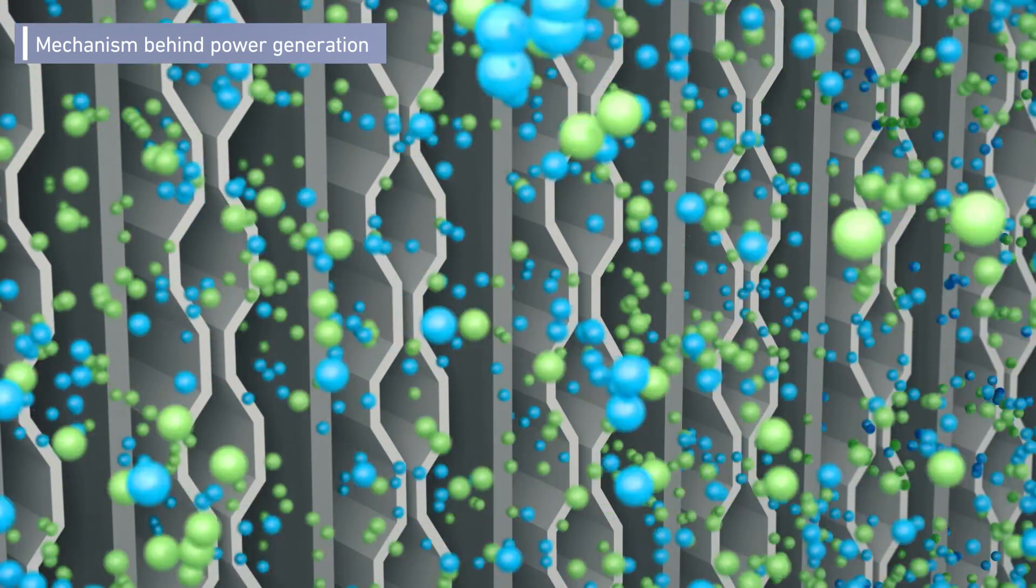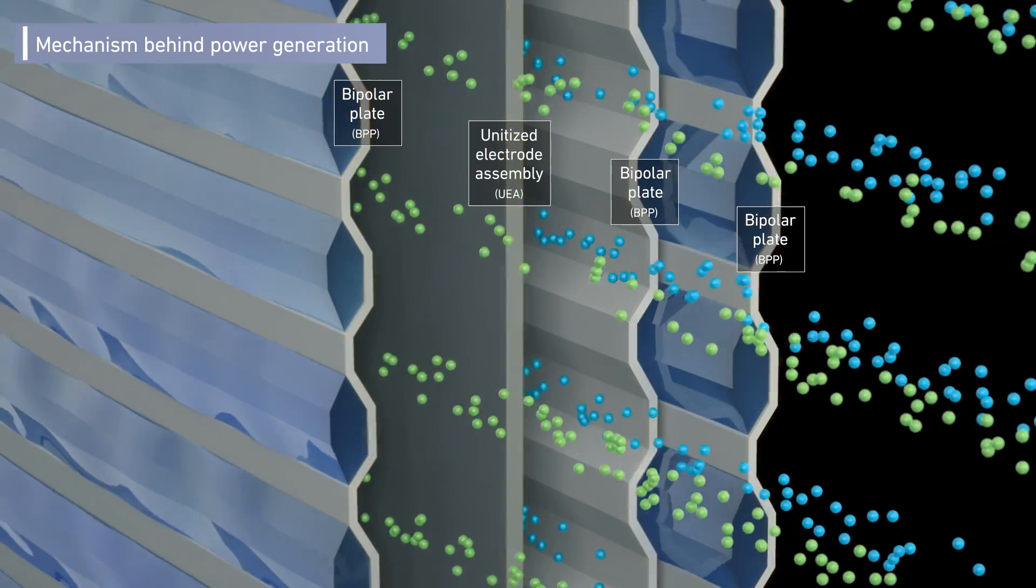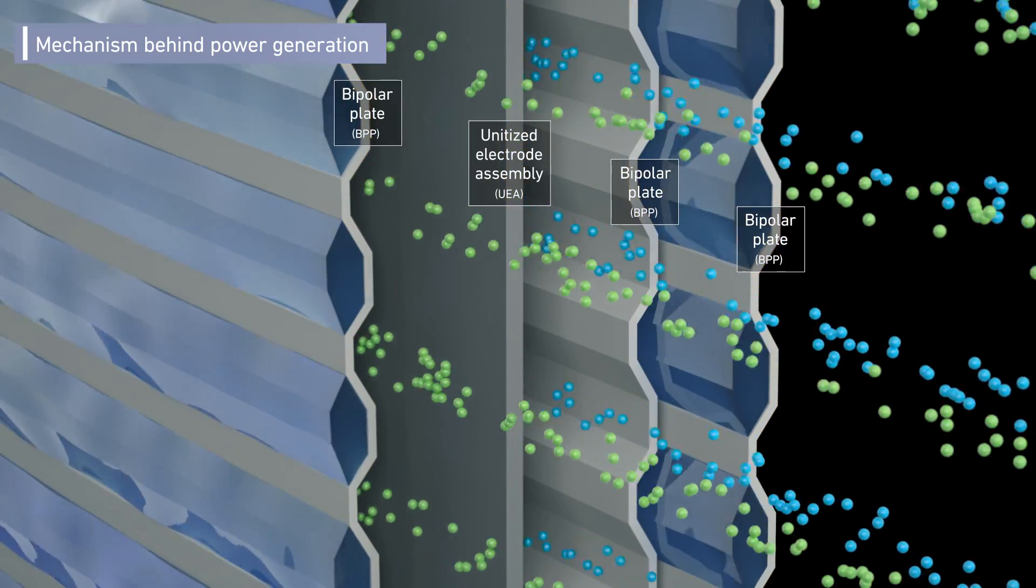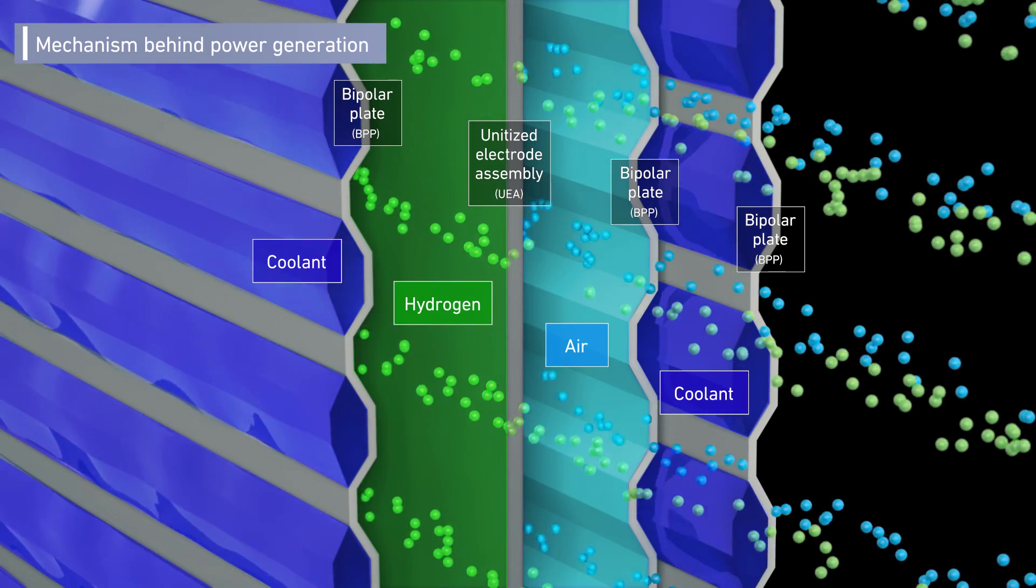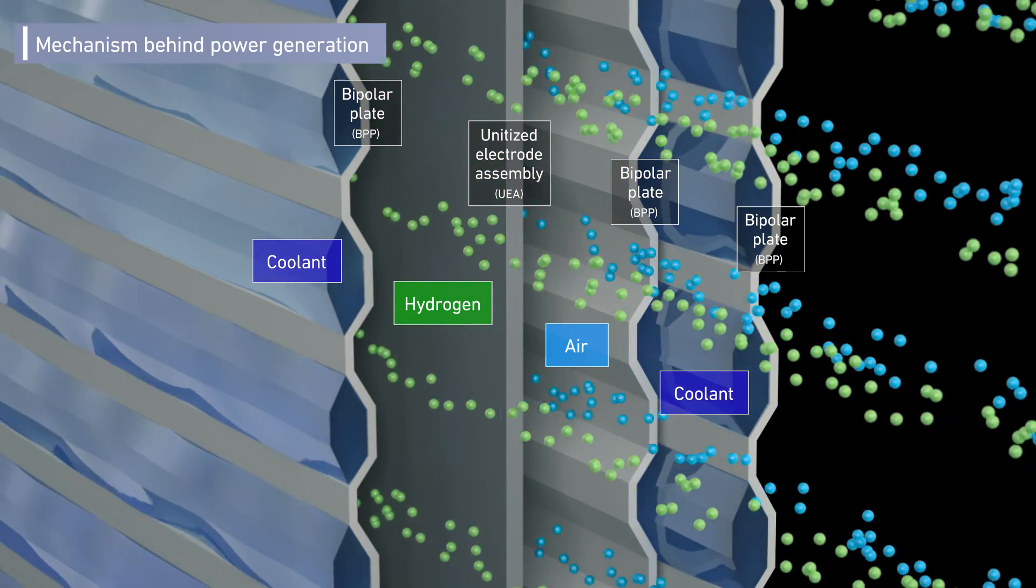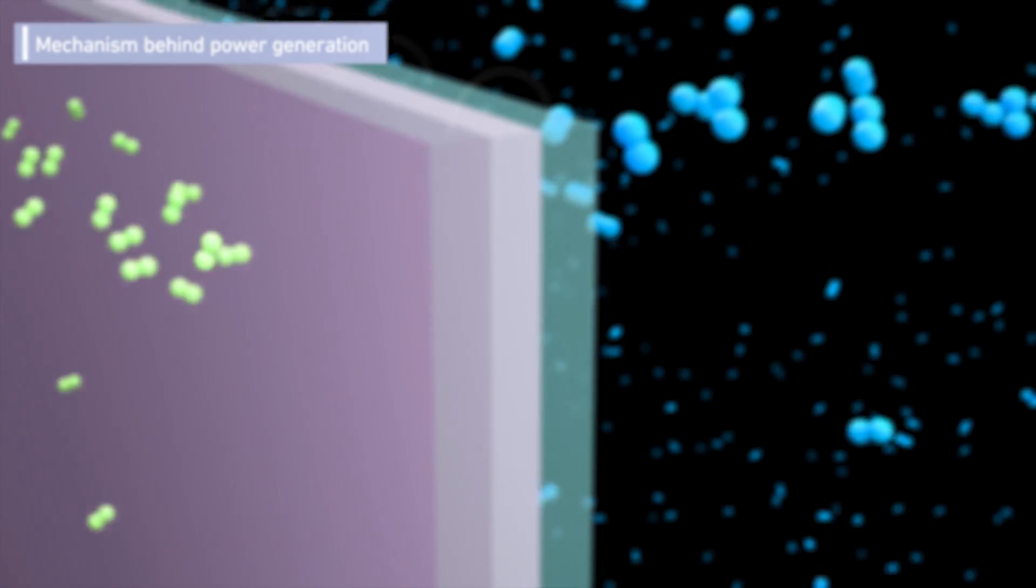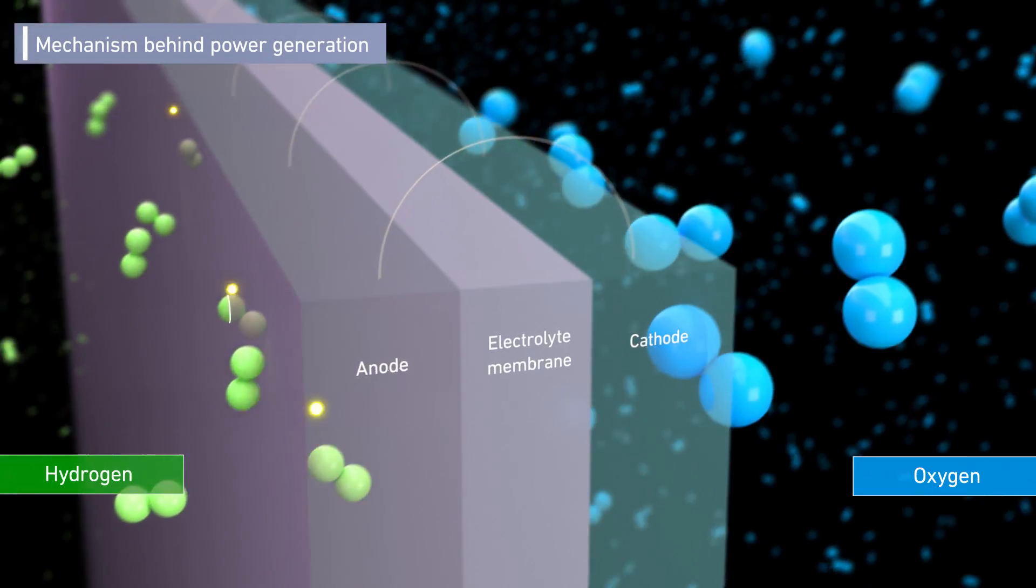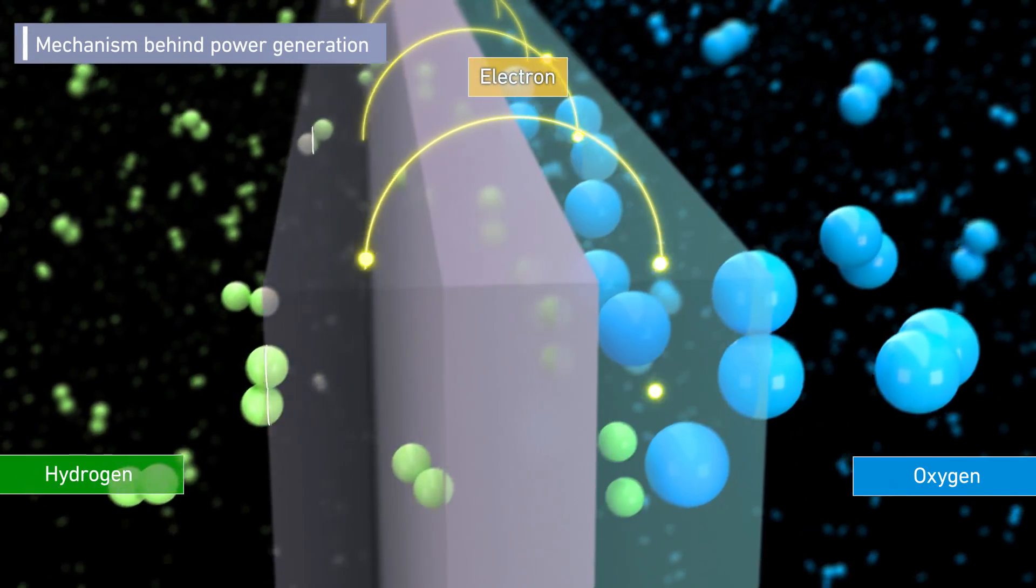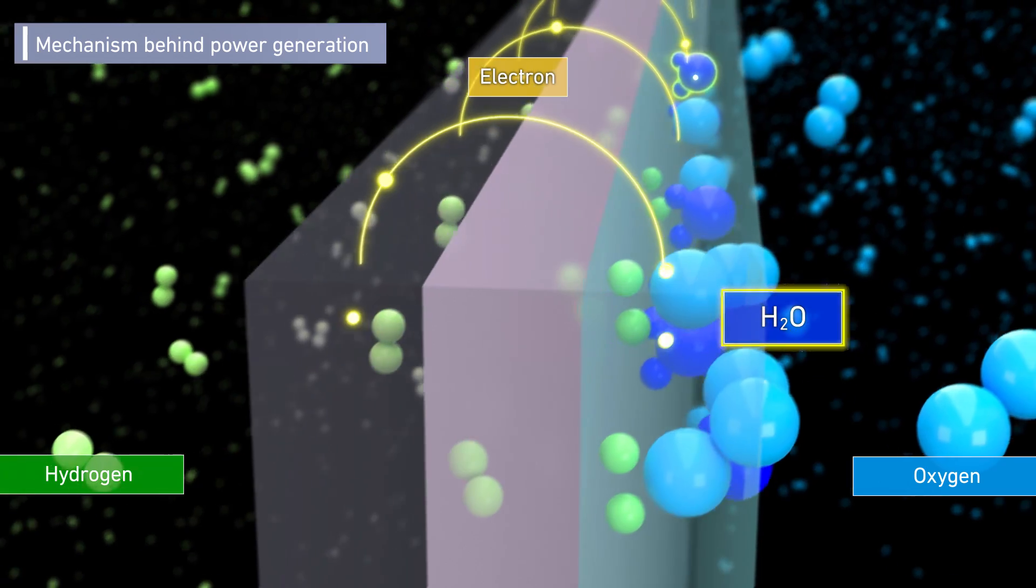Hydrogen and air flow inside the stack on both sides of the unitized electrode assembly and the heat generated during power generation is removed by the cooling water inside the bipolar plates. Power is generated within each cell by reacting hydrogen with oxygen in the air.